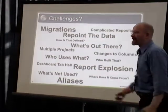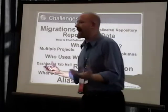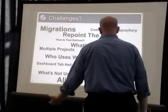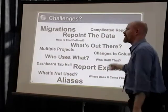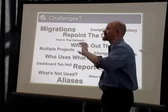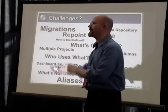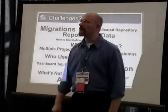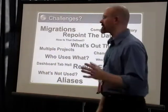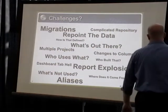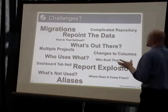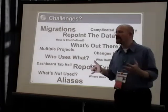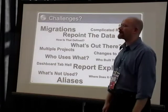What's not being used? I've got 15,000 reports — are people actually accessing all 15,000 of them? Where do things come from? In OBIE, there's a feature called aliases where you can sort of mask a column name and have it reference another name. That can get very confusing when you're trying to traverse back through everything. Again, this is certainly not an exhaustive list — there's a lot of challenges to administrating and maintaining a BI environment, and specifically OBIE.